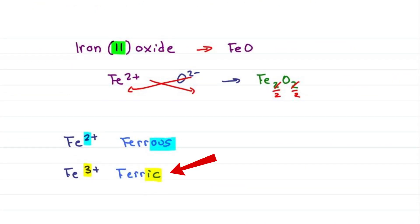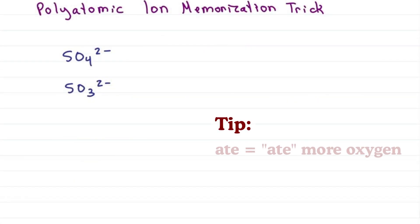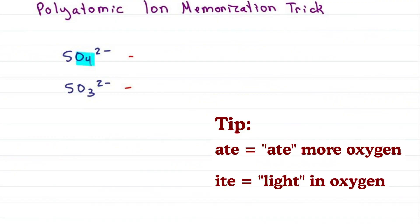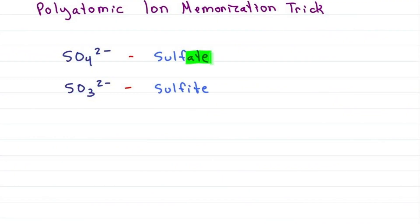Do you remember ick for more positive? Here we'll use ate for the one that ate more oxygen and ite for the one that is a bit light in oxygen, giving me sulfate for more oxygen and sulfite for the one that's light in oxygen.